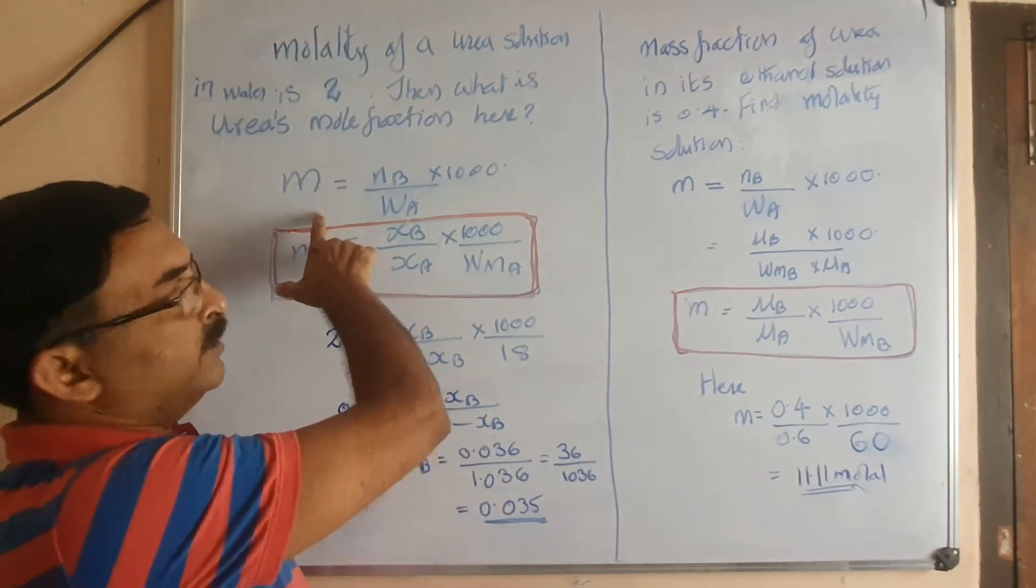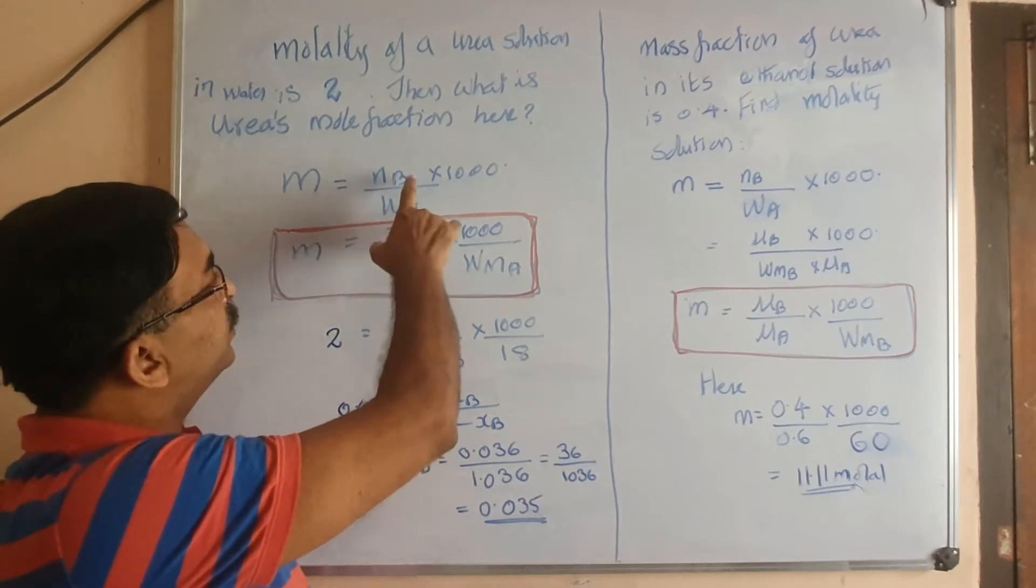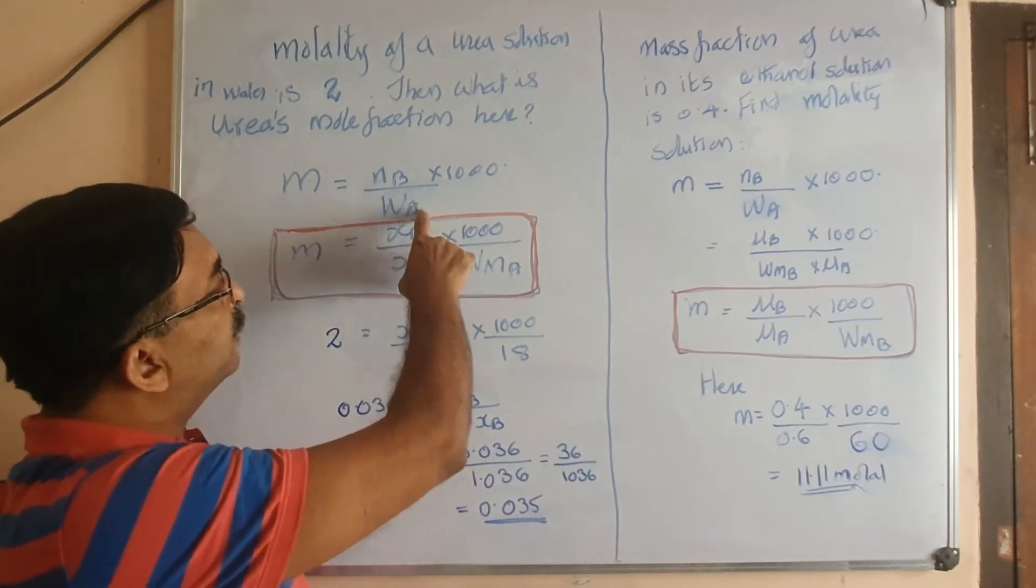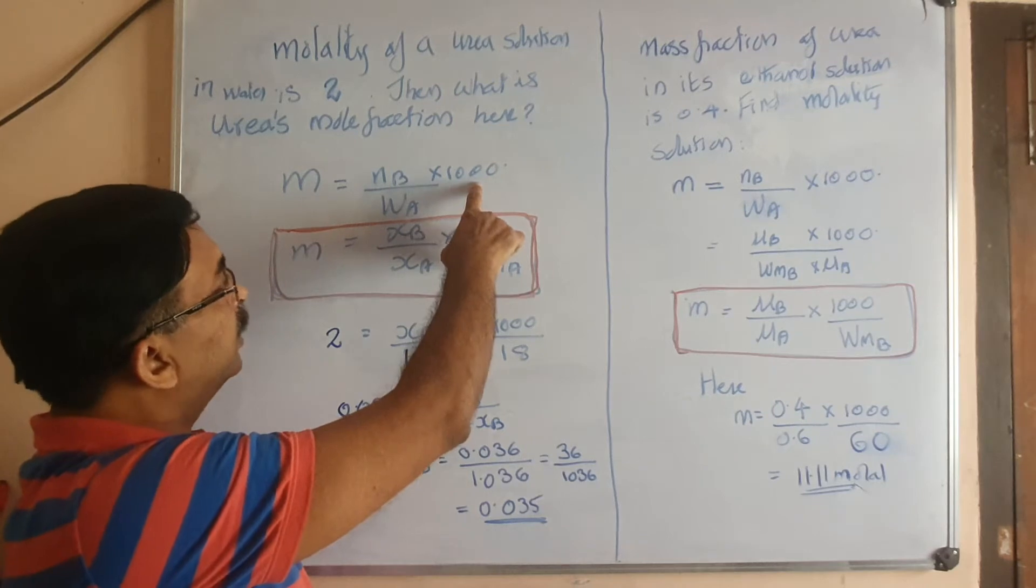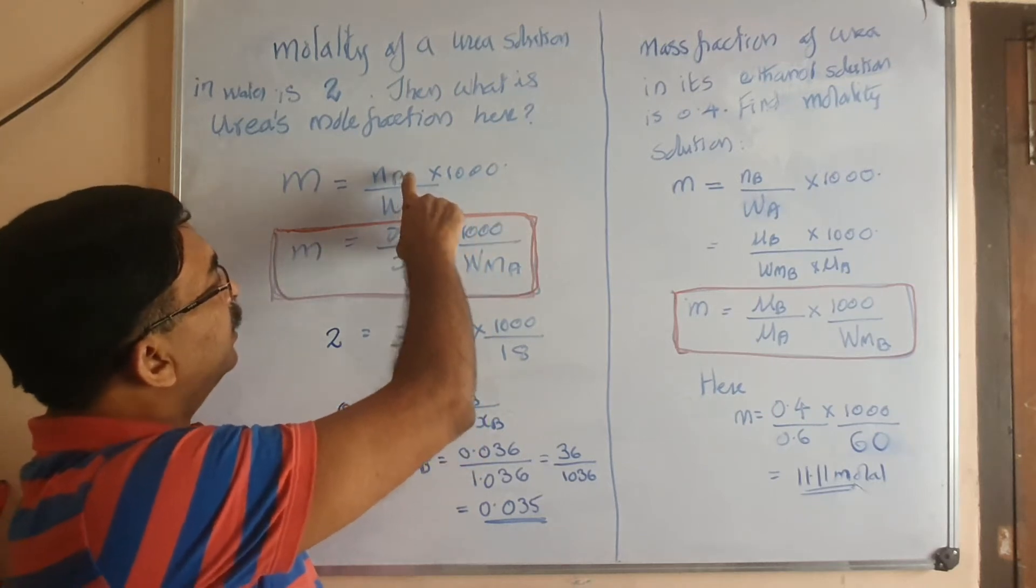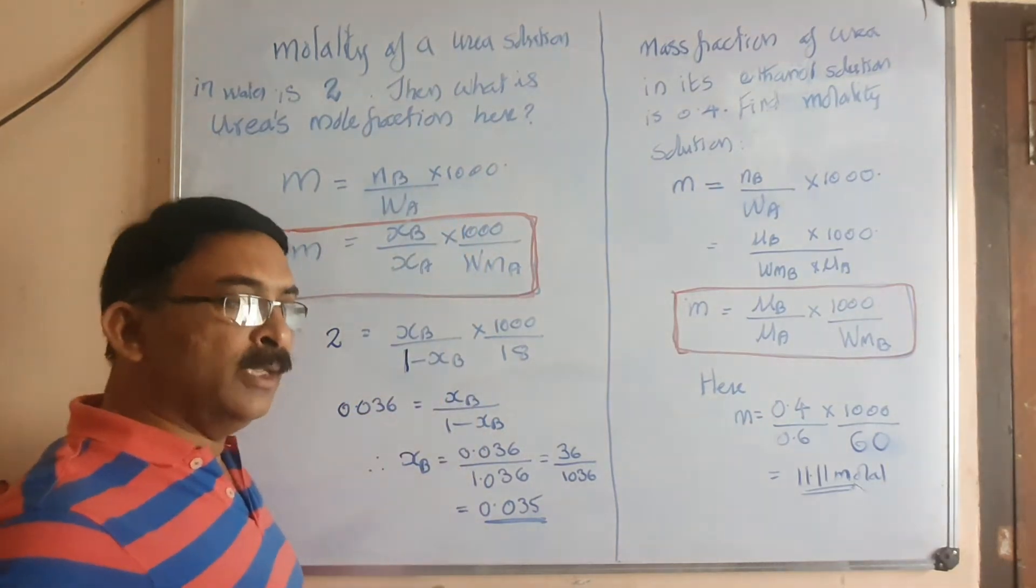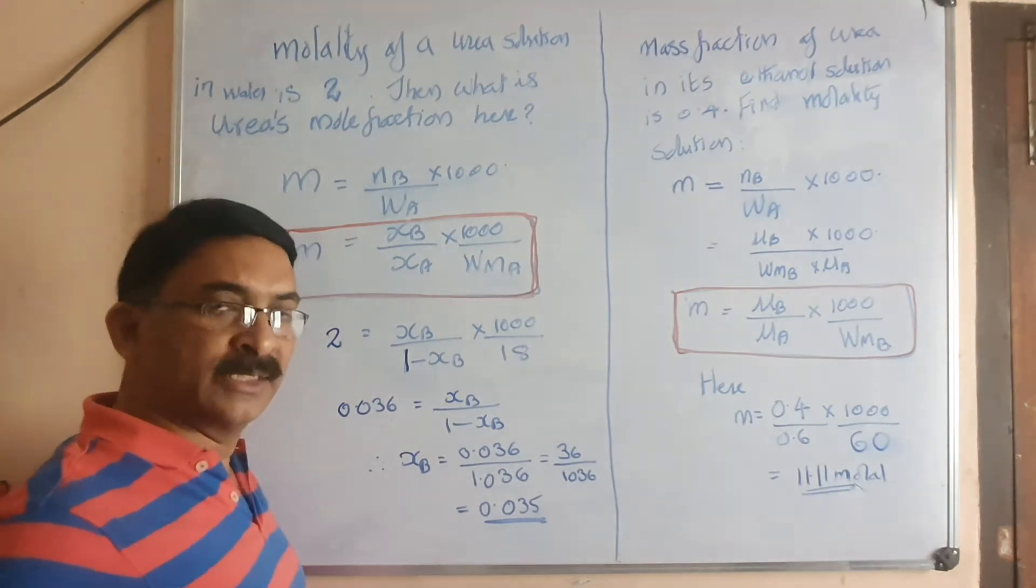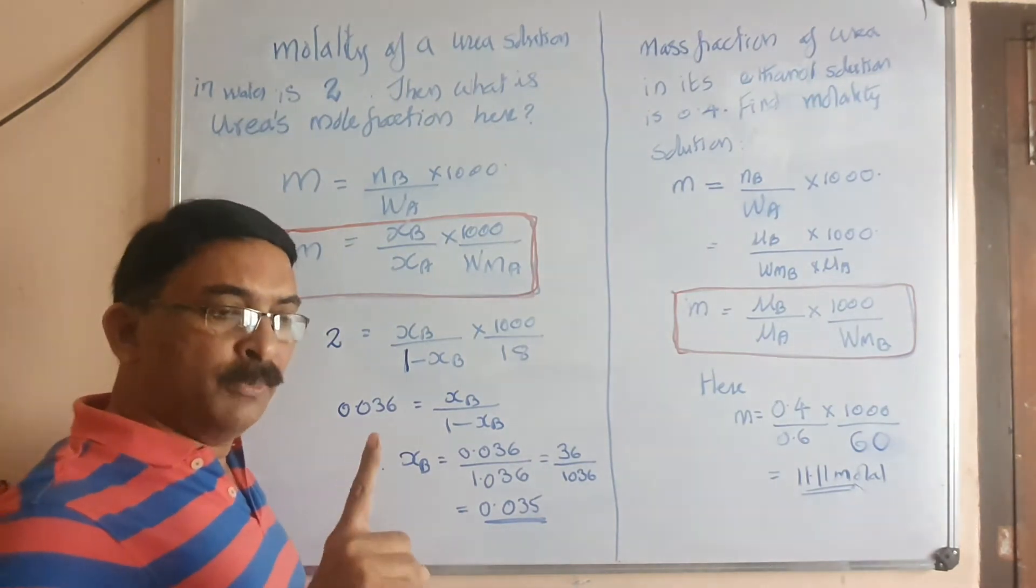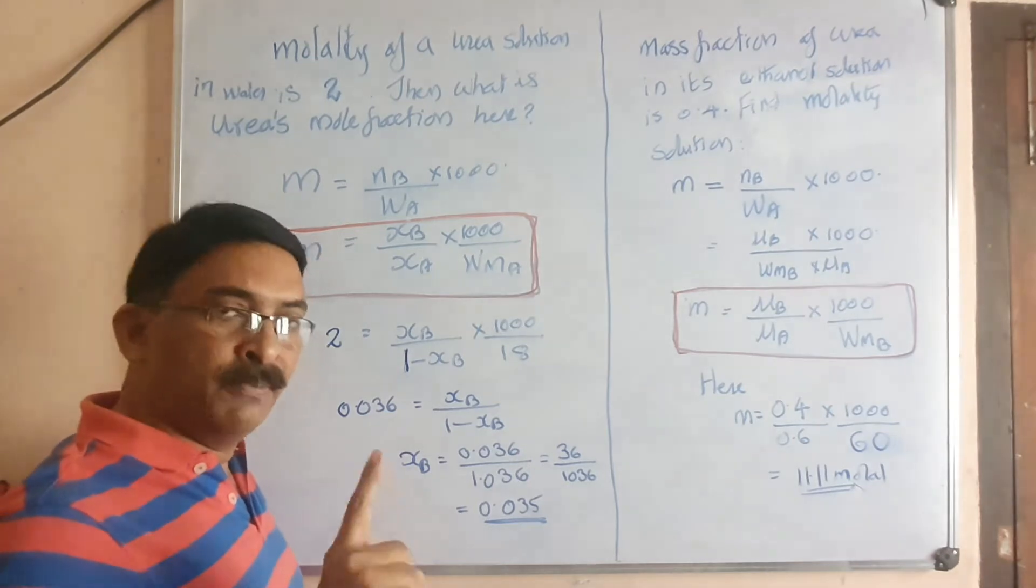We start from the known equation: m equals number of moles of solute by mass of solvent times 1000. Here we can take mole fraction to be the number of moles itself when the total amount is 1 mole. Mole fraction and mole are the same.